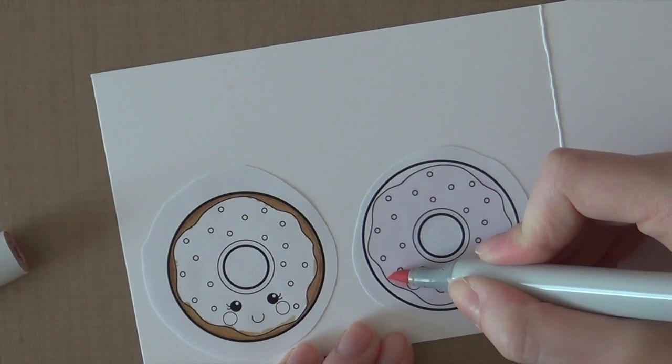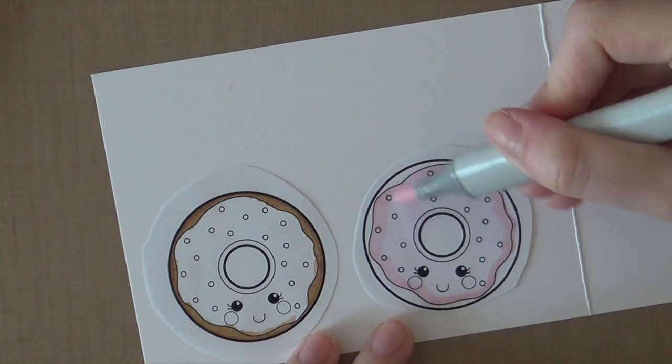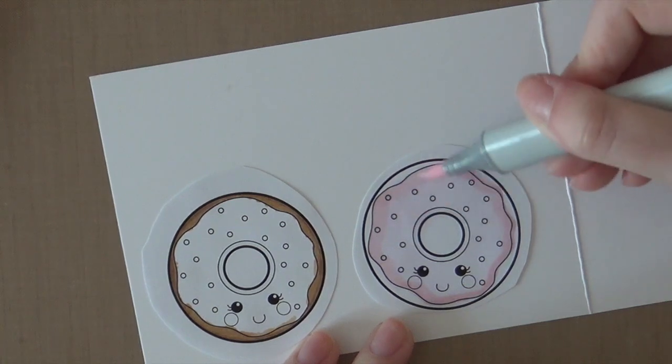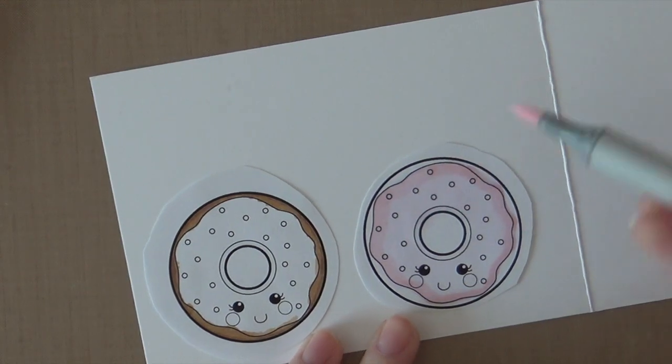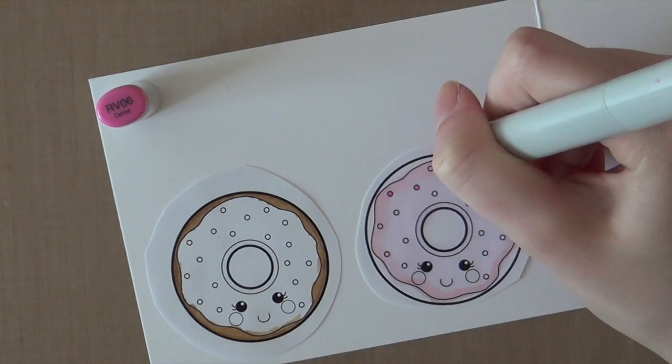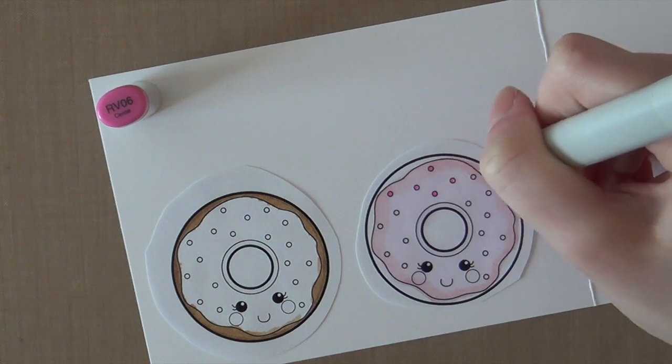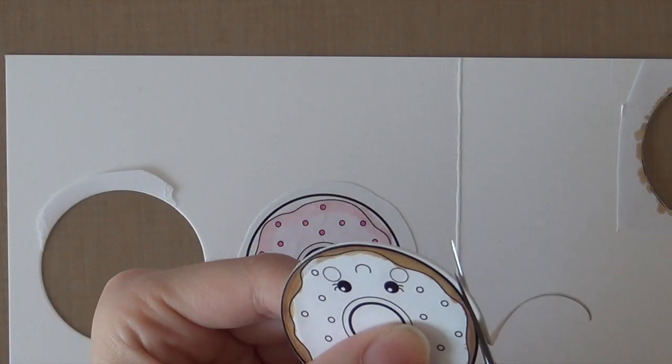Here I'm going to color the icing of the donut. I'm using an RV0000 Copic marker for that. I'm just going to add some shading using RV13, going around the edges of that donut. And then I'm blending it together using the lightest color again. I'm going to color those little dots using the RV06 Copic marker. This is a beautiful pink color.